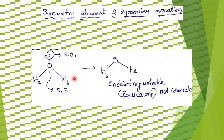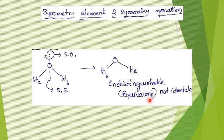If we look at these two orientations of the molecule, there is no significant difference at all. Both are water molecules, just with different orientations, and these two orientations are indistinguishable. If someone goes out and I rotate the molecule by 180 degrees, when they come back they will not be able to distinguish between the two orientations. We can call these orientations equivalent, but we cannot call them identical — identical would mean H-a and H-b are in the exact same positions, which they are not. They are equivalent or indistinguishable, but not identical.